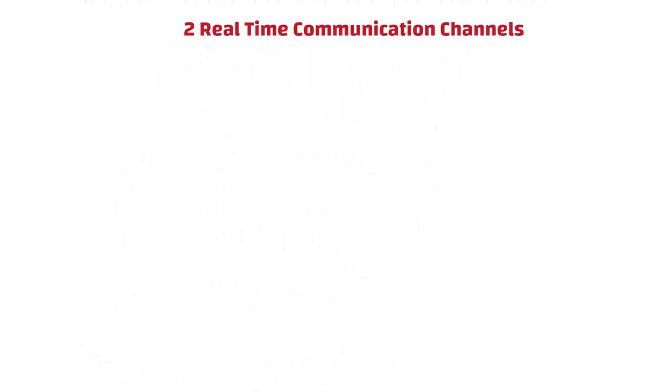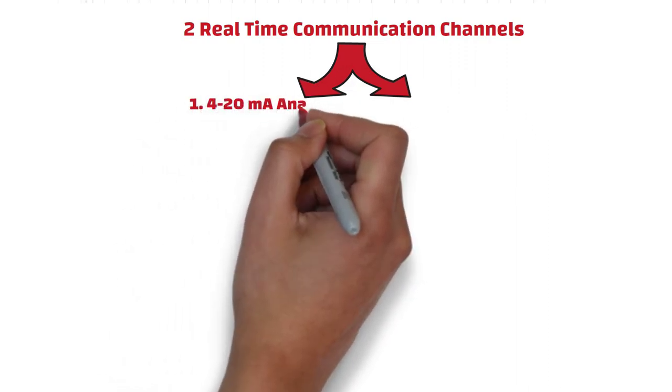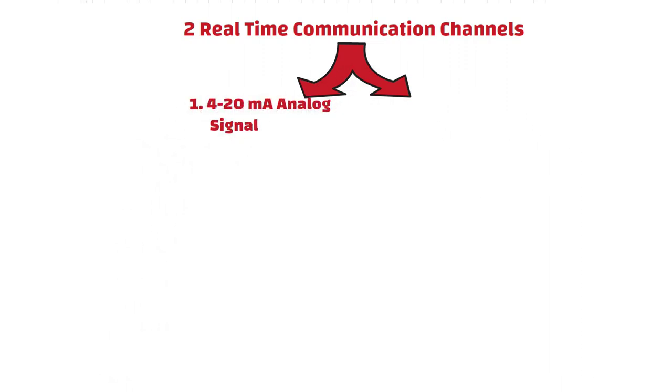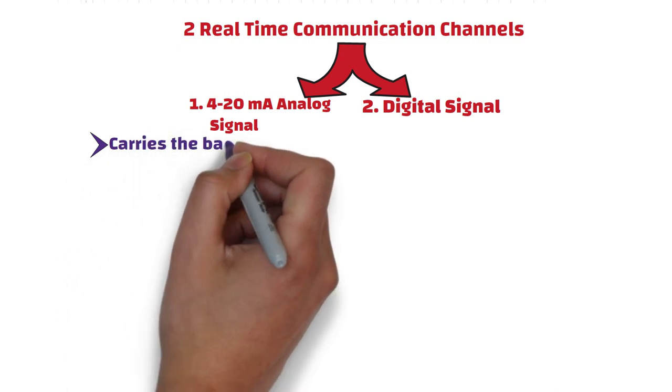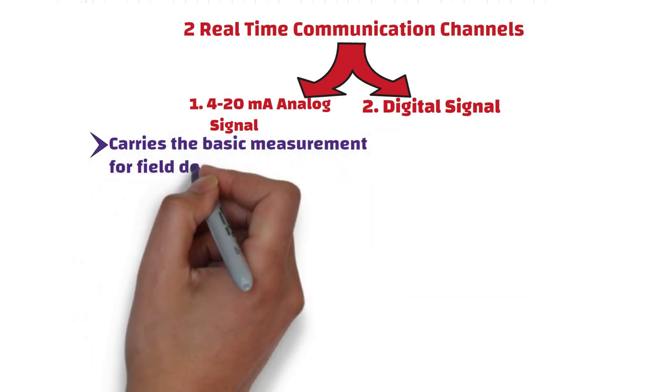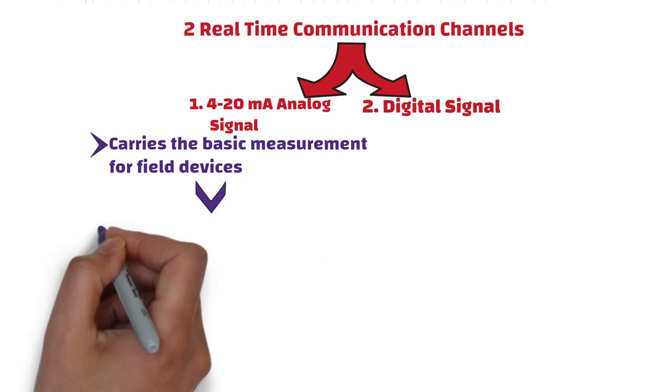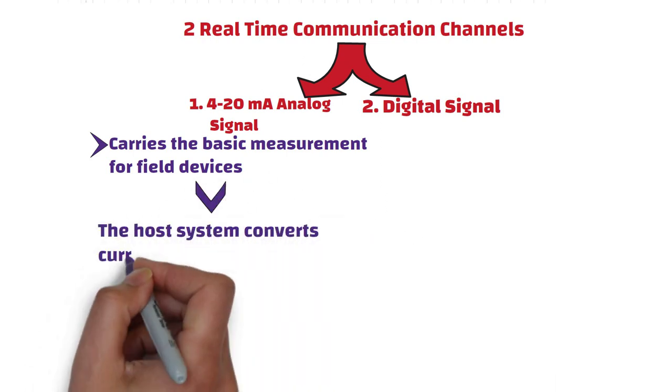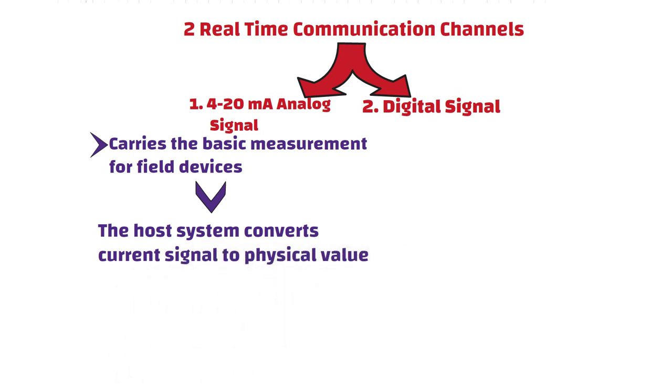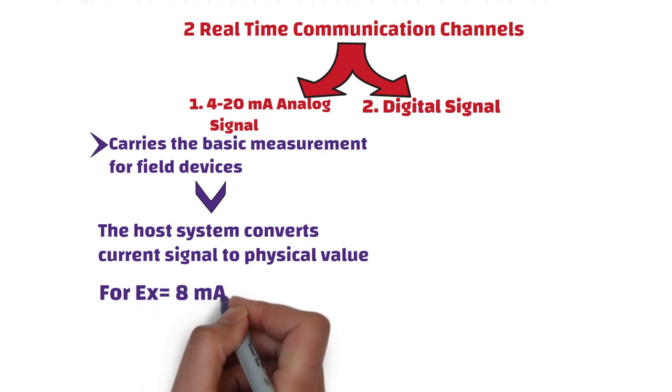Furthermore, HART provides two real-time communication channels. One channel is for 4-20 mA analog signal. Another channel is for digital signal. The 4-20 mA signal carries the basic measurement for field devices using the industry standard 4-20 mA current loop. And the host system converts current signal to physical value according to parameters defined by HART software. For example, host device converts 8 mA output of field device to 20 liters per second.